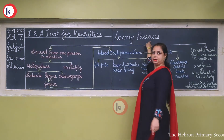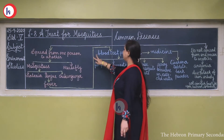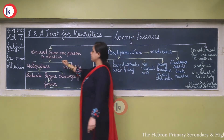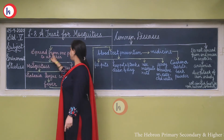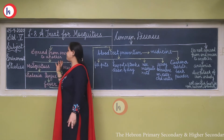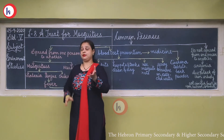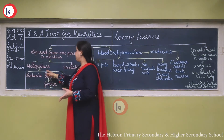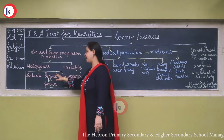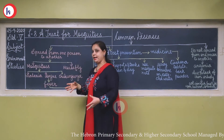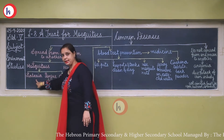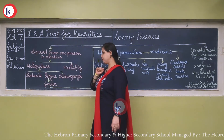First, let's look at common diseases. There are two categories: the first is diseases which spread from one person to another. These are spread by mosquitoes and houseflies. If mosquitoes or houseflies bite you, you can get malaria, dengue, or chikungunya.